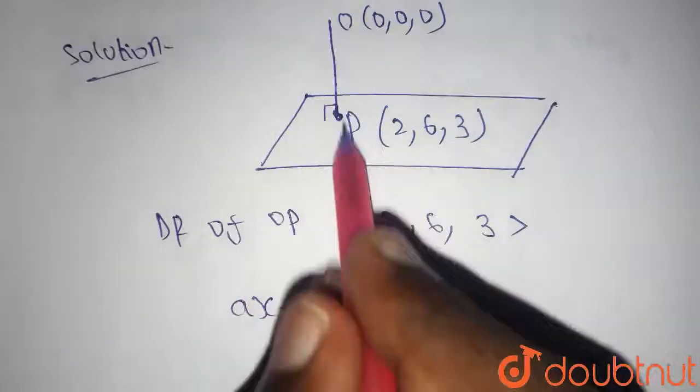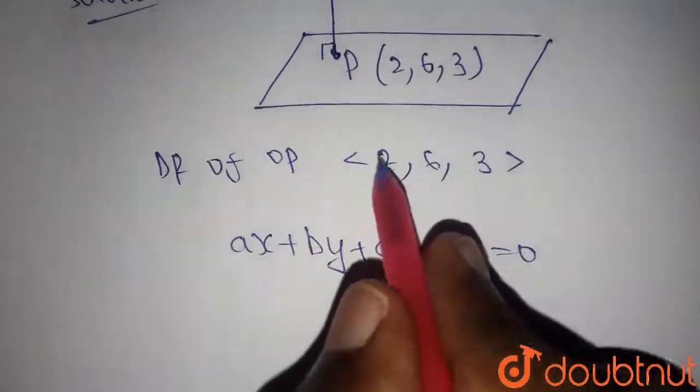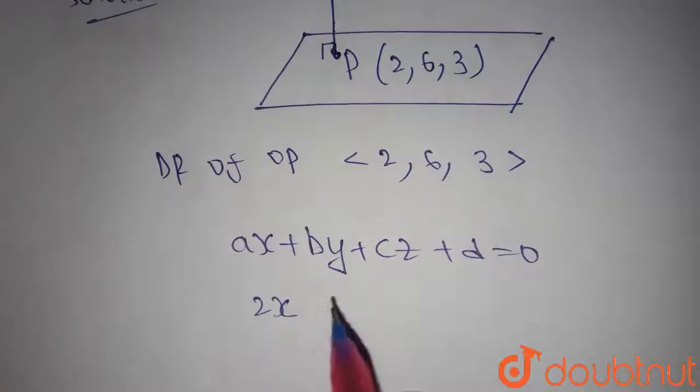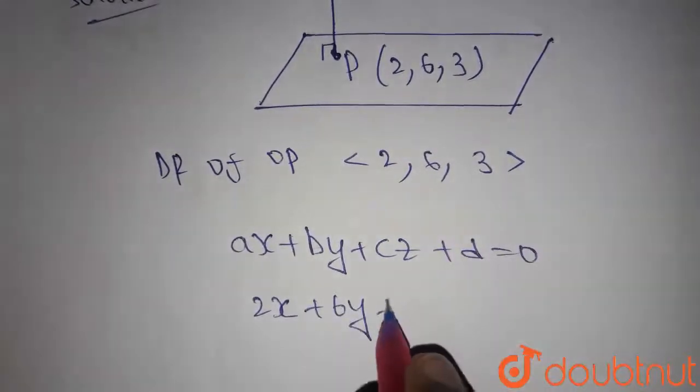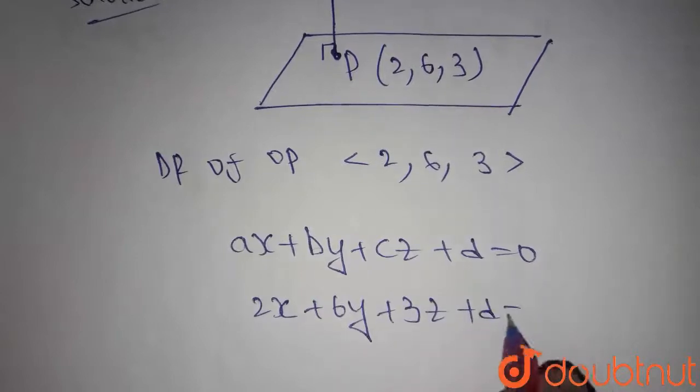Here we can clearly see that OP is normal to the plane. Now you can write the plane equation as 2x plus 6y plus 3z plus d equals 0.